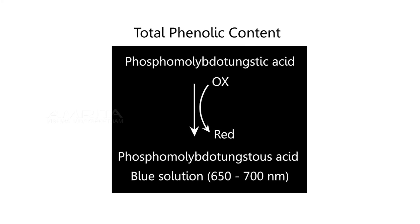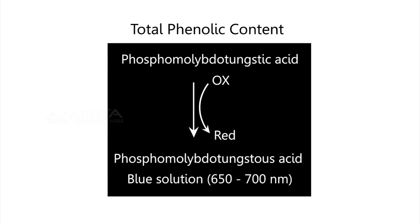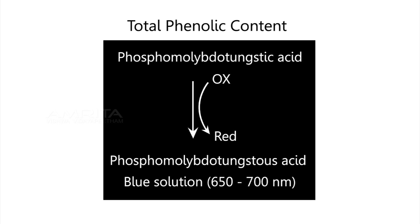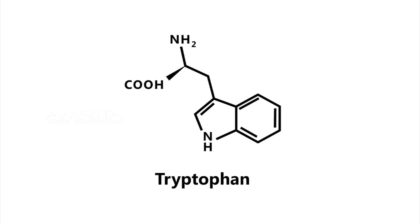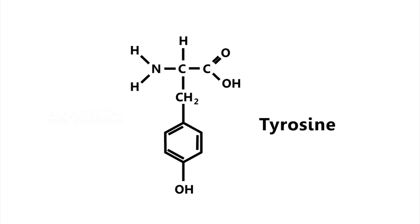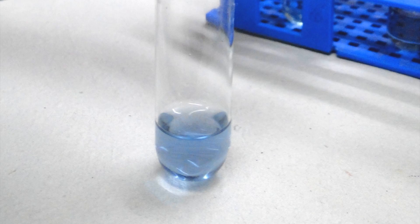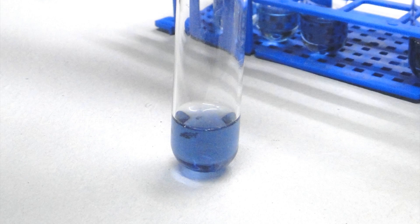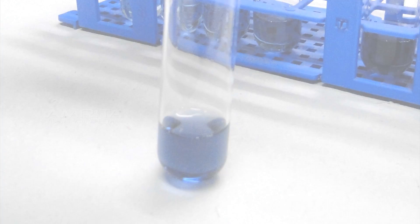The blue-purple color is formed due to the reduction of phospho-molybdo tungstate to heteropoly molybdenum blue by the copper-catalyzed oxidation of aromatic amino acids tryptophan and tyrosine. Thus the intensity of color depends on the amount of these aromatic amino acids present and will vary for different proteins.